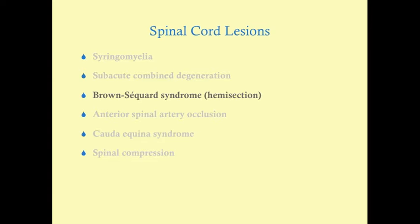Brown-Sequard syndrome commonly comes up on the USMLE and is a very distinct syndrome. This comes within a wider array of talks on spinal cord lesions, which includes syringomyelia, subacute combined degeneration, Brown-Sequard syndrome, ASA stroke, cauda equina syndrome, and spinal compression.